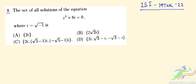Question number 8 states: find the set of all solutions of the equation z³ + 8i = 0, where i is √(-1). Since z³ is present, there will be three solutions.